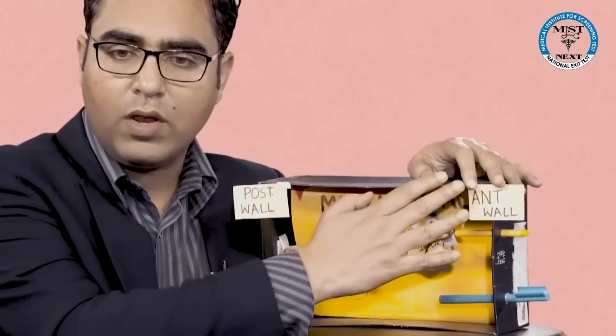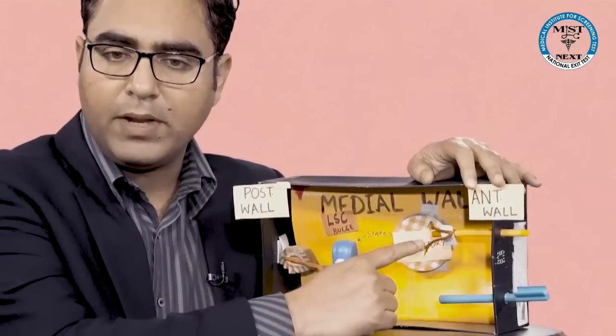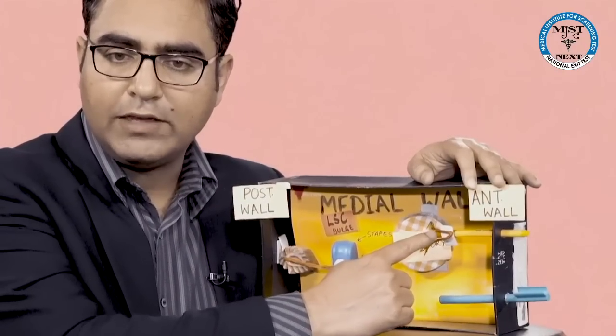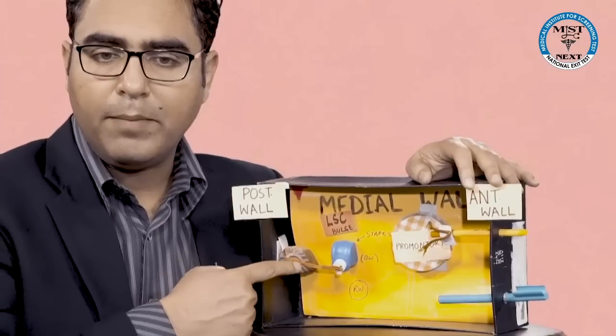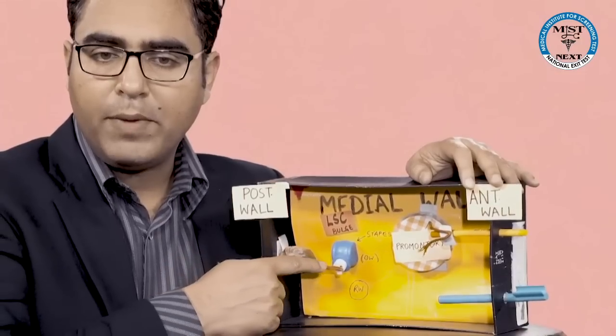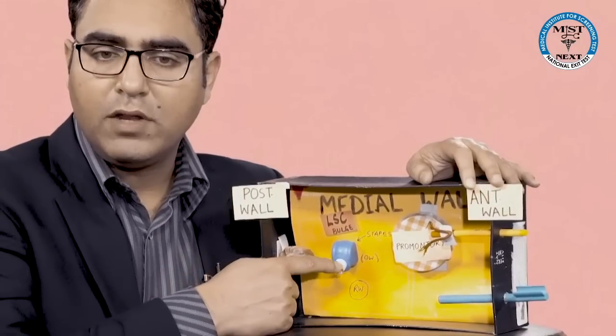So to summarize: anterior wall — from the anterior wall comes the tensor tympani muscle, which attaches to the malleus. From the posterior wall there is a projection called the pyramid, and from the pyramid comes the stapedius muscle which attaches to the stapes. So anterior and posterior wall is covered.